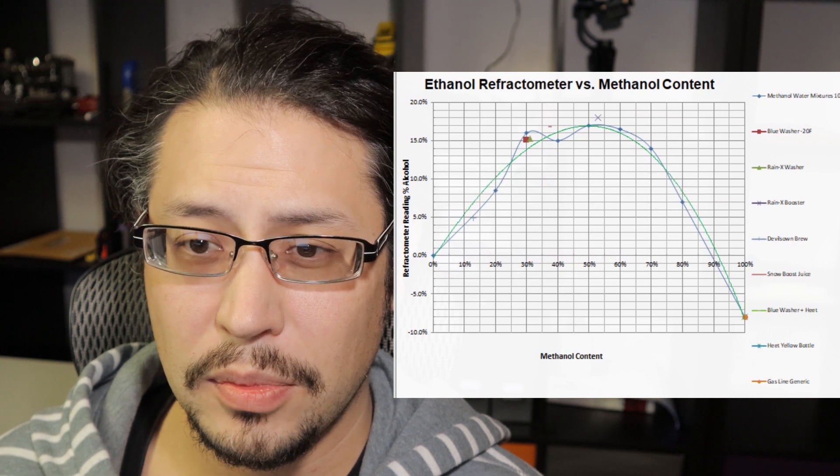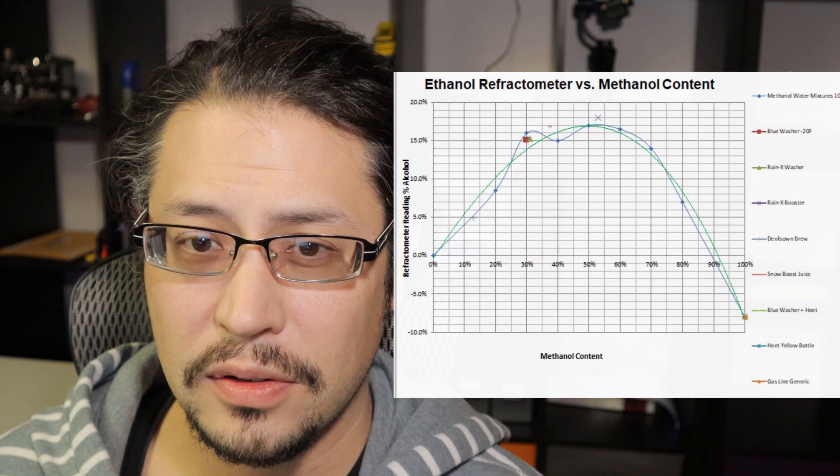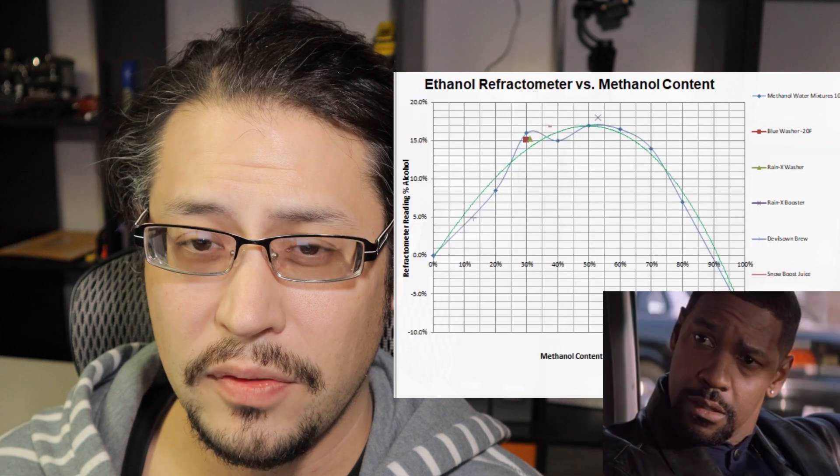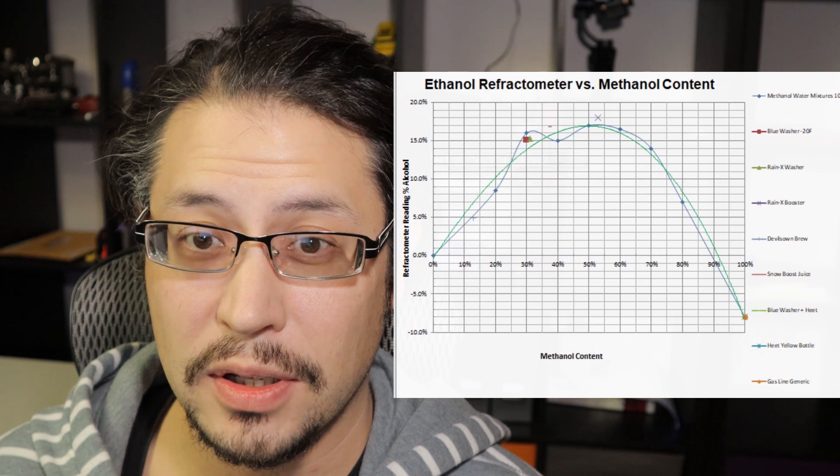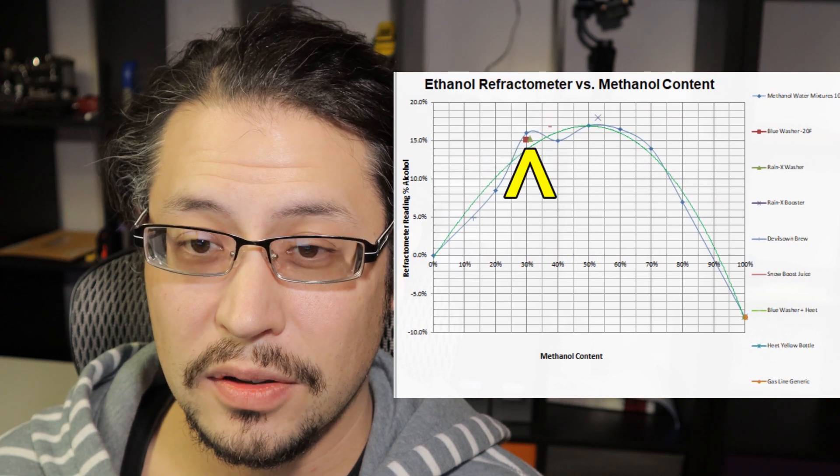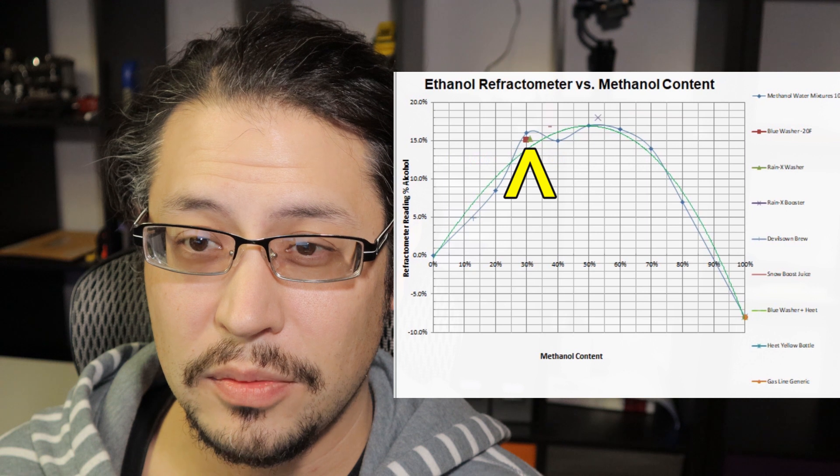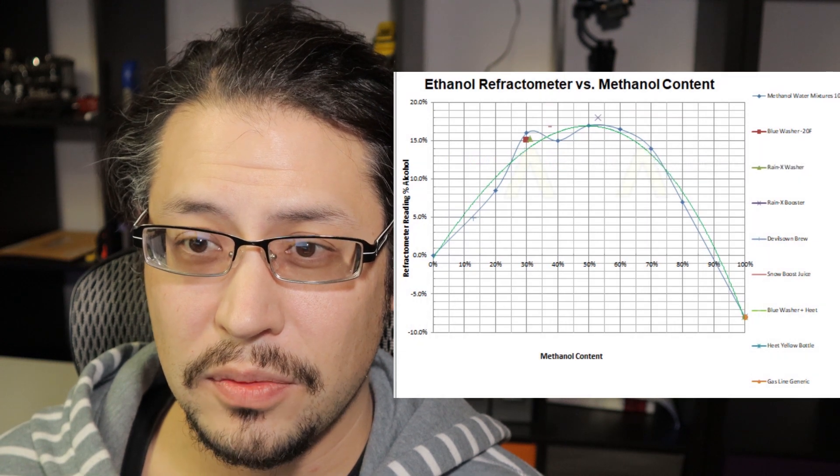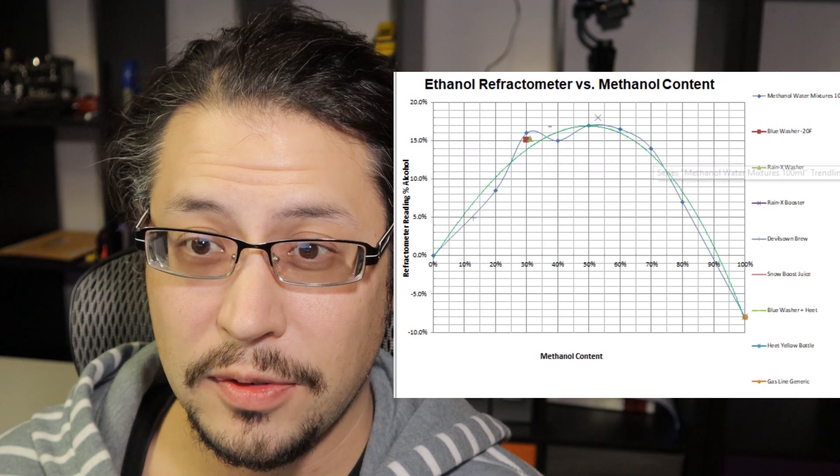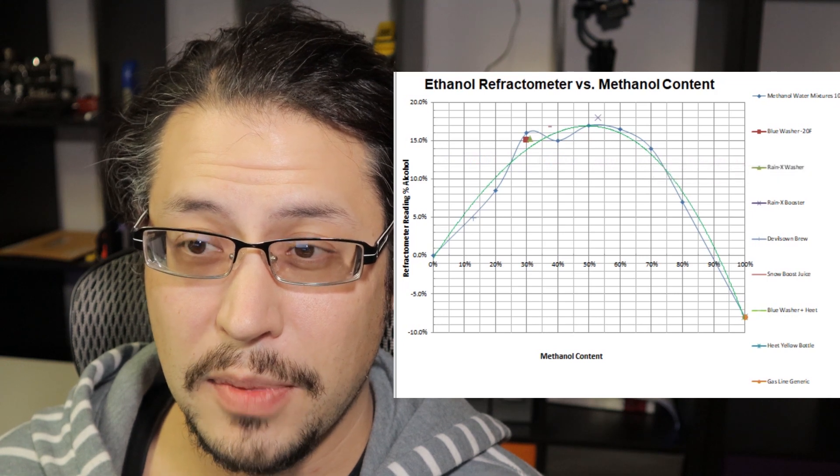I wouldn't recommend this method because here could be 20% methanol or 80% methanol. Especially up here you don't know what side you're on based on your reading. If you're reading 15% alcohol on this meter, it could be either 35% or it could be 70% methanol. If you're mixing it yourself, this is probably not the best method.